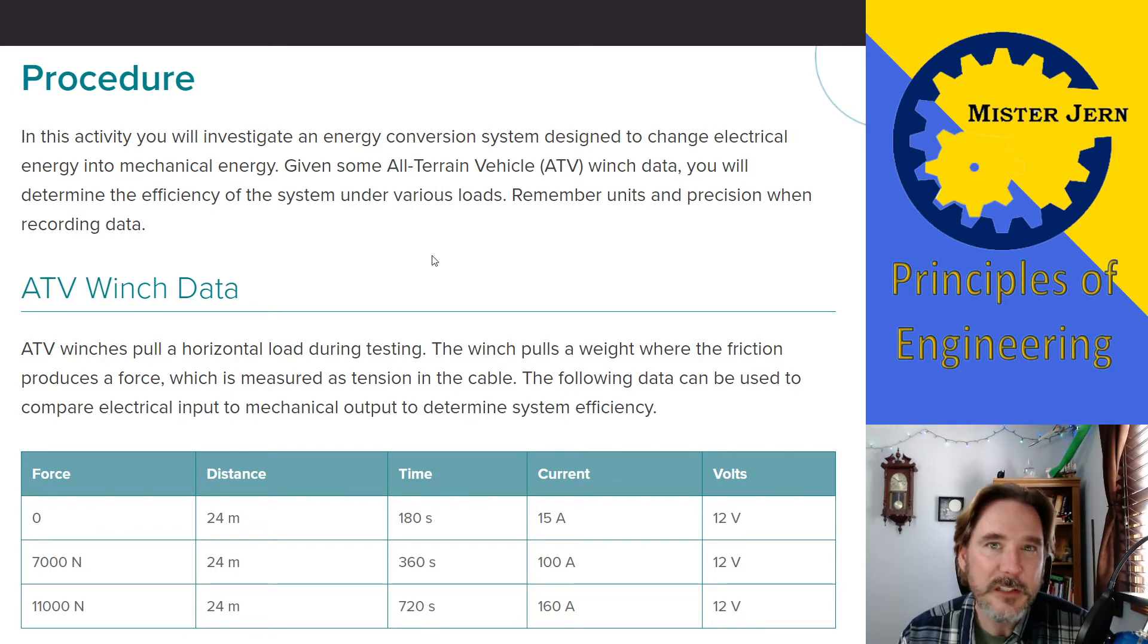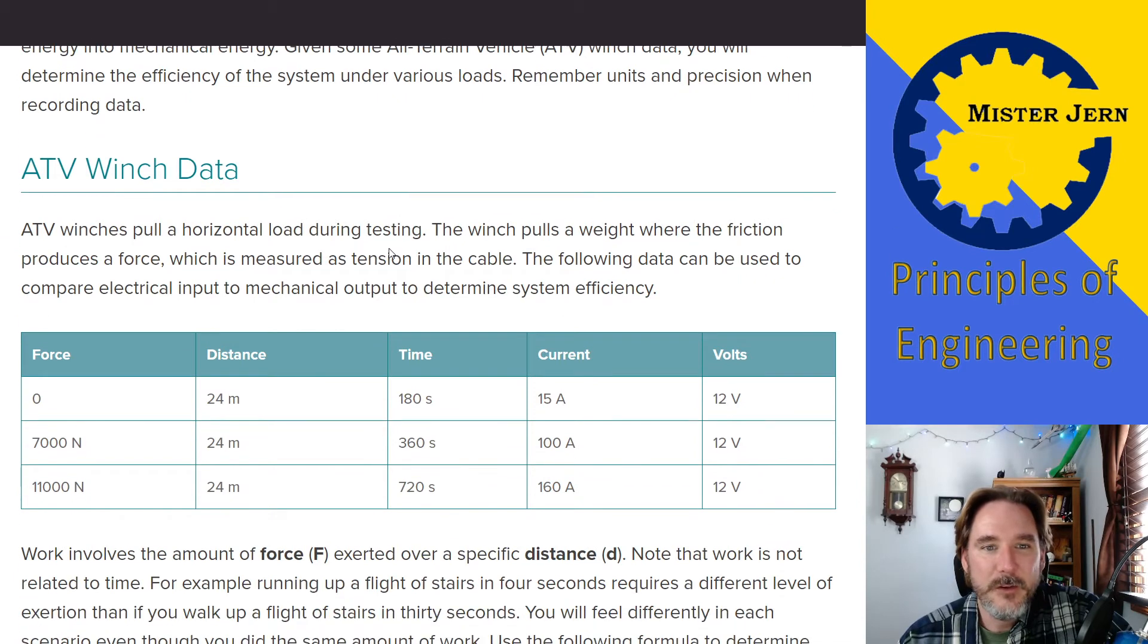There's a winch system which you probably could picture. You could just Google it if you need to, but it's the thing that's usually on the front of an ATV, sometimes on the back. It's an electrical thing that spins around and there's a cable in it, and it pulls—you could hook up things and pull with it. So Google it if you don't know what it is. It's very useful. But basically, it's a winch with a cable type thing, and it pulls a horizontal load during testing.